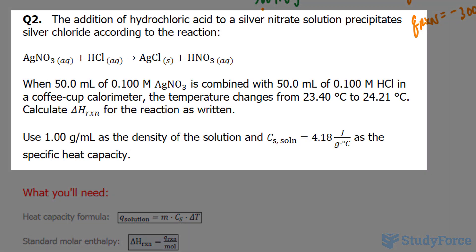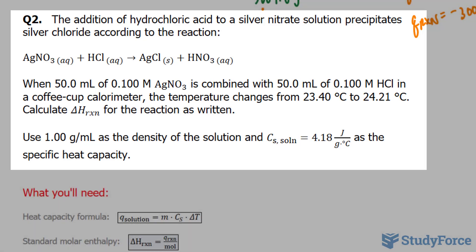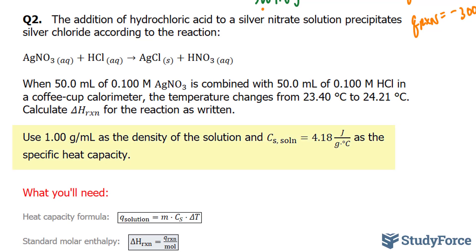The addition of hydrochloric acid to a silver nitrate solution precipitates silver chloride according to the reaction shown below. When 50.0 milliliters of 0.100 molar AgNO3 is combined with 50.0 milliliters of 0.100 molar HCl in a coffee cup calorimeter, the temperature changes from 23.4 to 24.21 degrees Celsius. We're asked to calculate the change in enthalpy of the reaction for the solution as written.